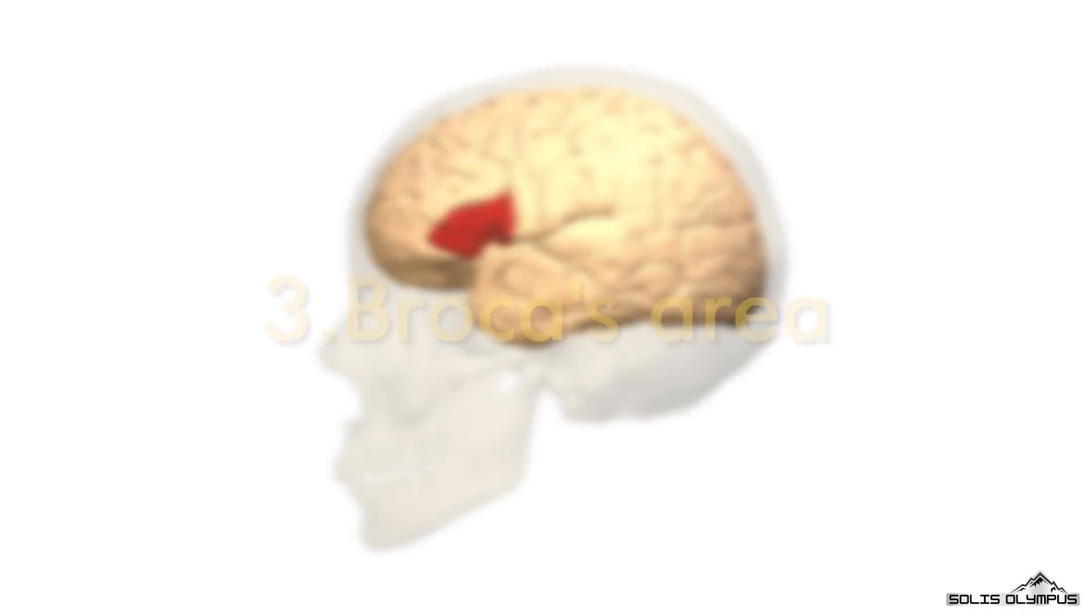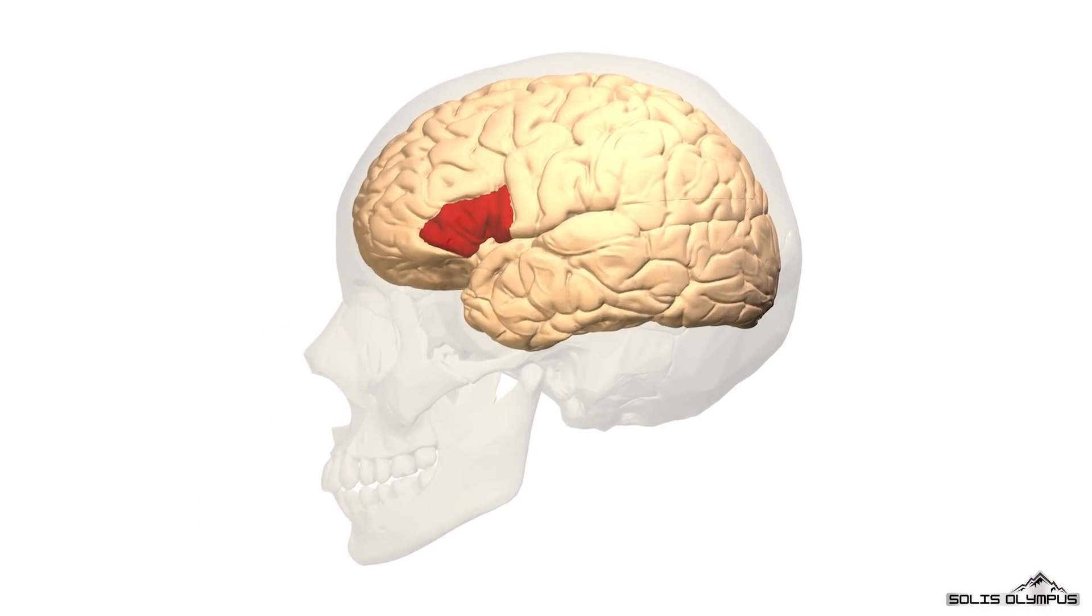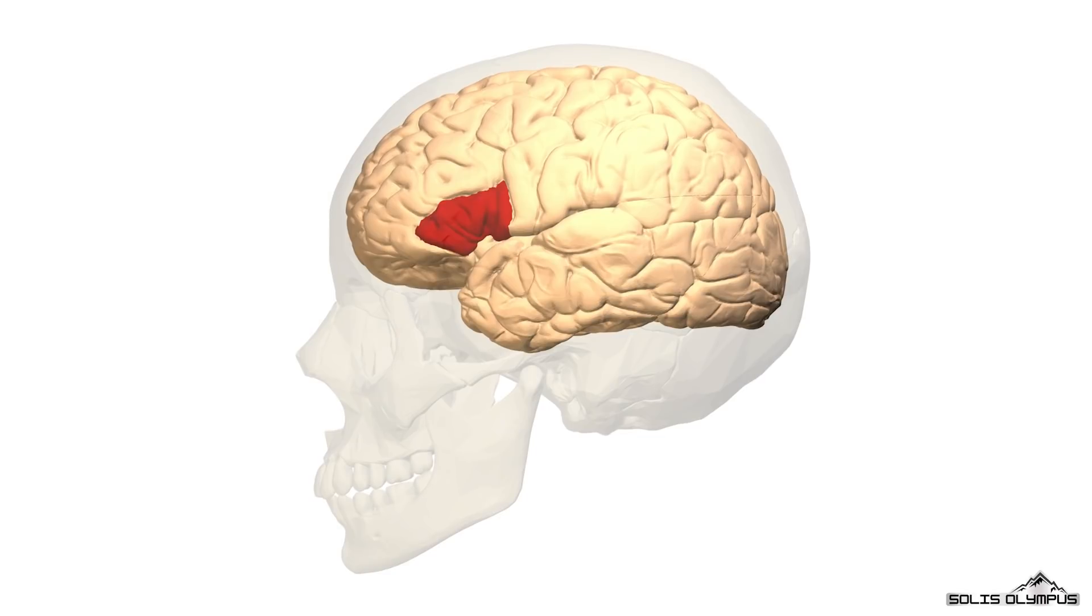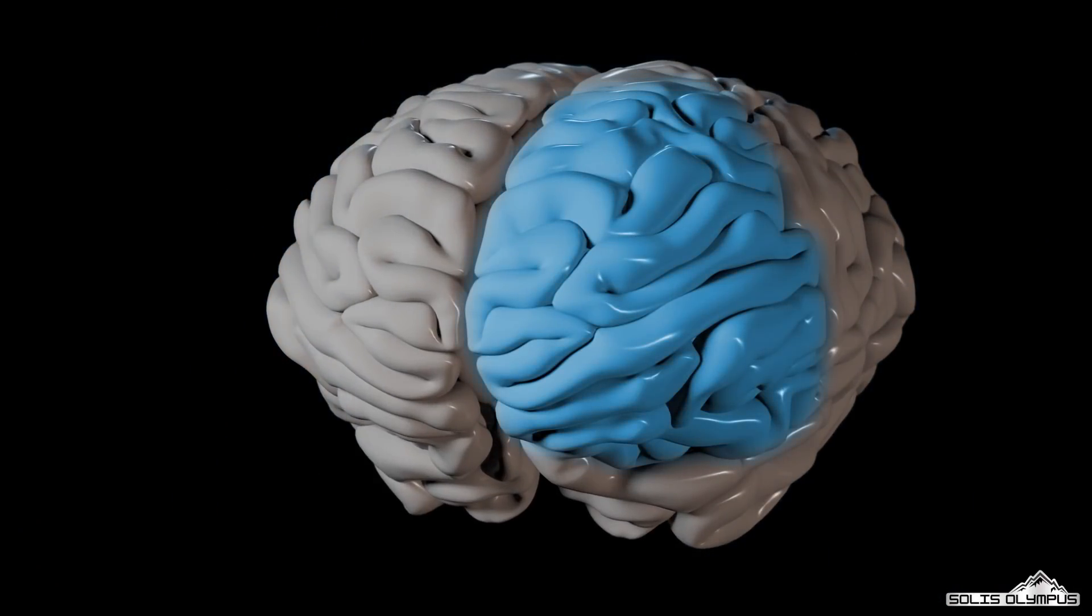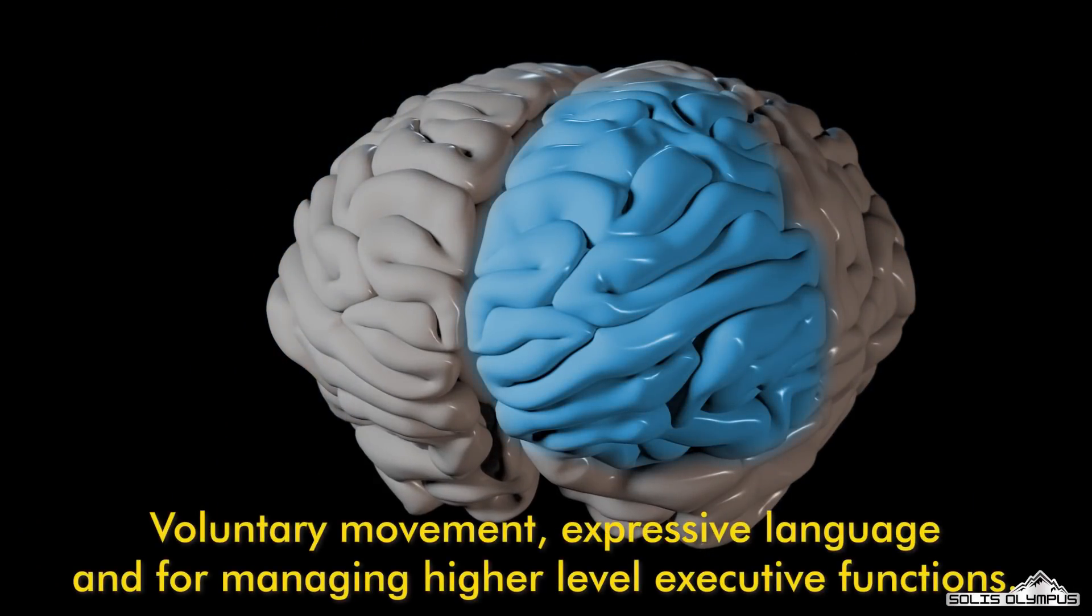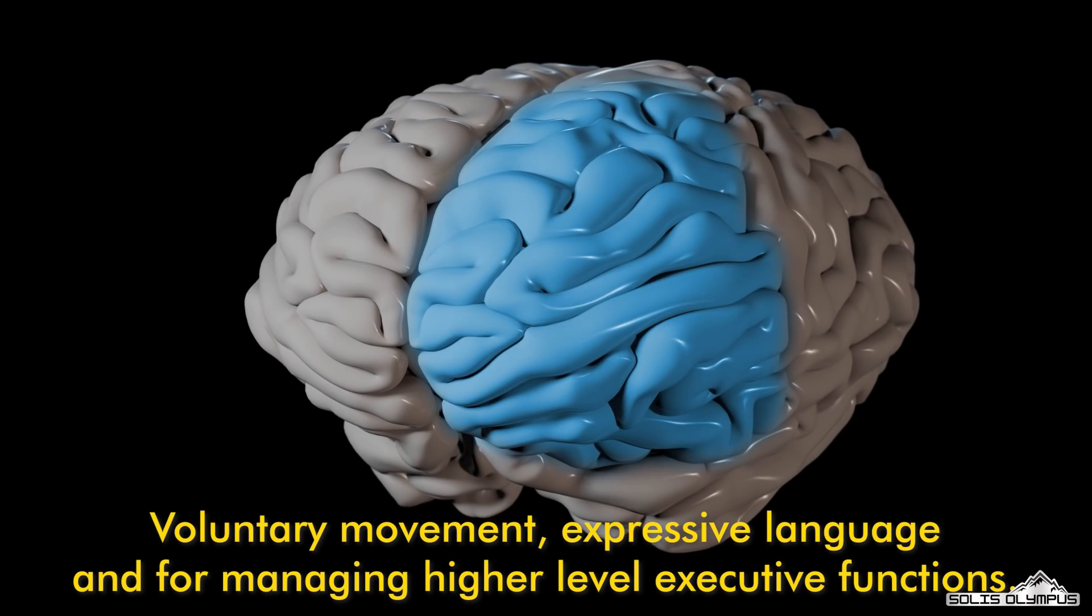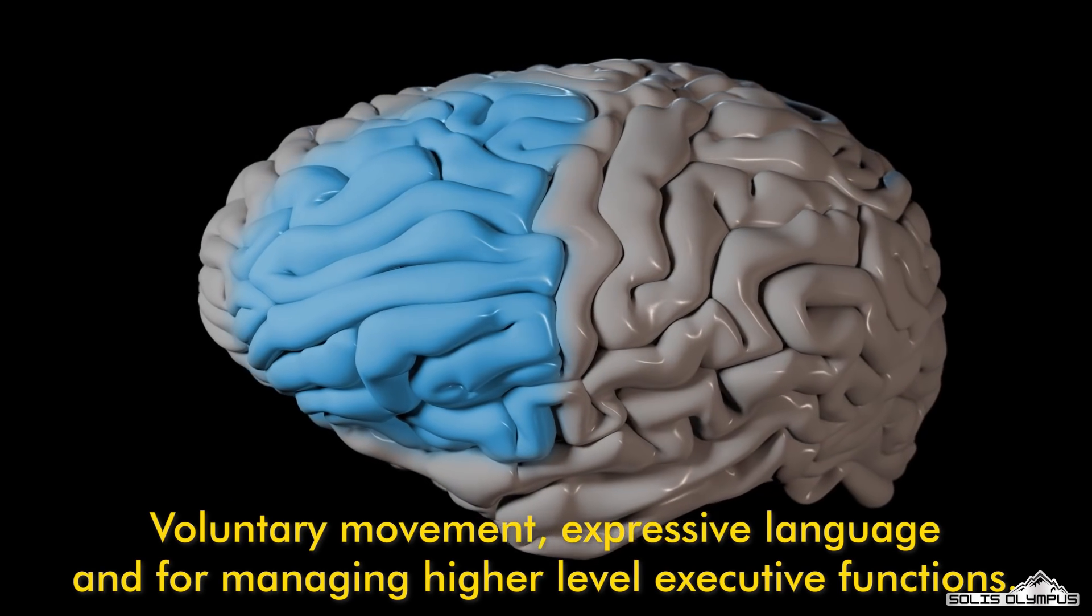Broca's area is also known as the motor speech area. It is near the motor cortex and utilized in speech production. This area regulates breathing patterns while speaking and vocalizations required for normal speech. So in general, we can say that the frontal lobe is important for voluntary movement, expressive language, and for managing higher-level executive functions.